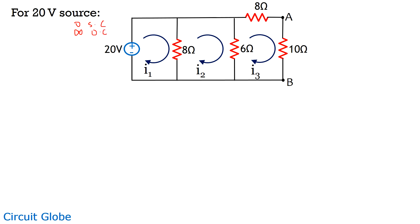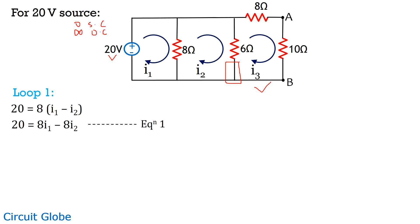In this circuit, we are only considering the 20-volt source, so the 15-volt source is replaced by its internal resistance — that is, it is short-circuited. We now apply KVL in all three loops. For loop 1, with the 20-volt source present, we get: 20 = 8·I1 − 8·I2.